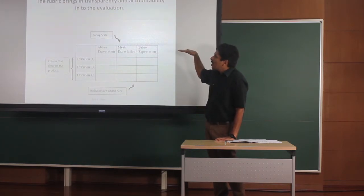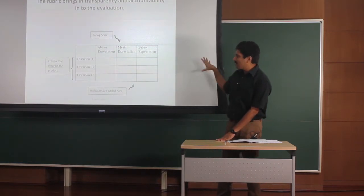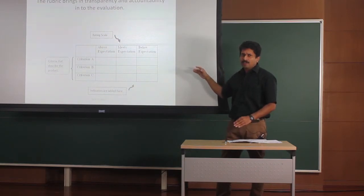And on the upper side you have a rating scale: above expectation, meets expectation, below expectation. And then you have metrics, cells, and all the cells will be having descriptors or indicators.